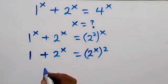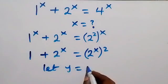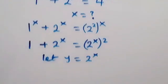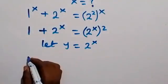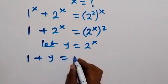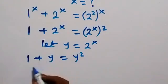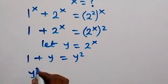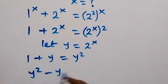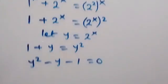We have 2 raised to power x. Let y be equals to 2 raised to power x. From here we can rewrite this equation as 1 plus y equals to y squared. Then taking this to the other side to form an equation, we have y squared minus y minus 1 equals to 0.